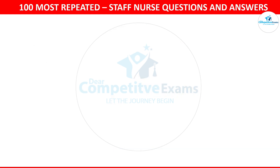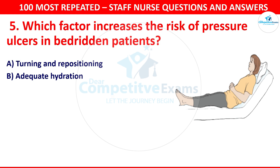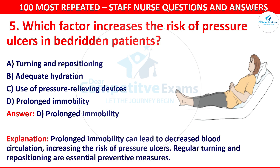Question 5. Which factor increases the risk of pressure ulcers in bed-ridden patients? Your options are turning and repositioning, adequate hydration, use of pressure relieving devices or prolonged immobility. The correct answer is prolonged immobility. Prolonged immobility can lead to decreased blood circulation, increasing the risk of pressure ulcers. Regular turning and repositioning are essential preventive measures.